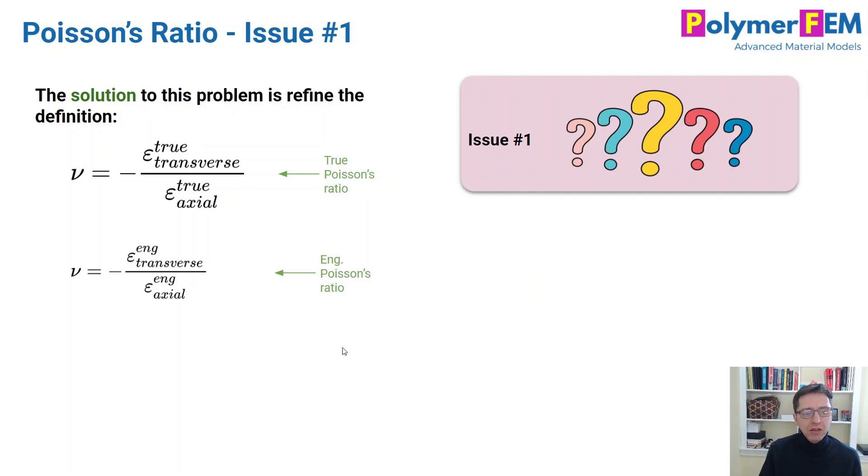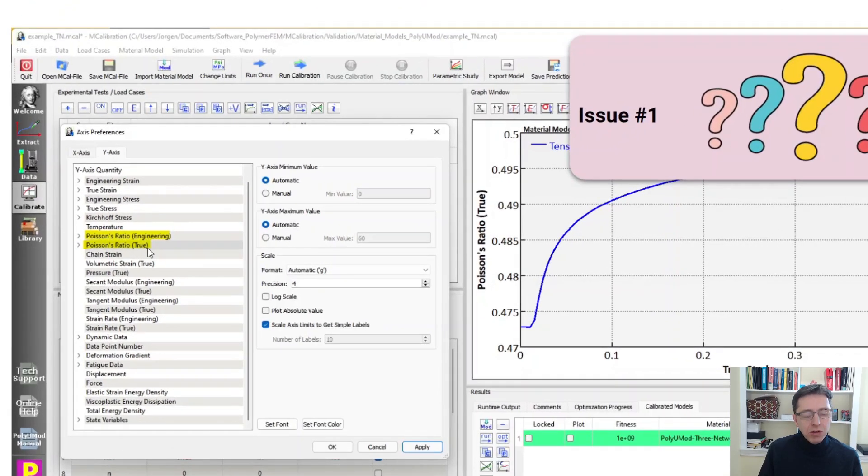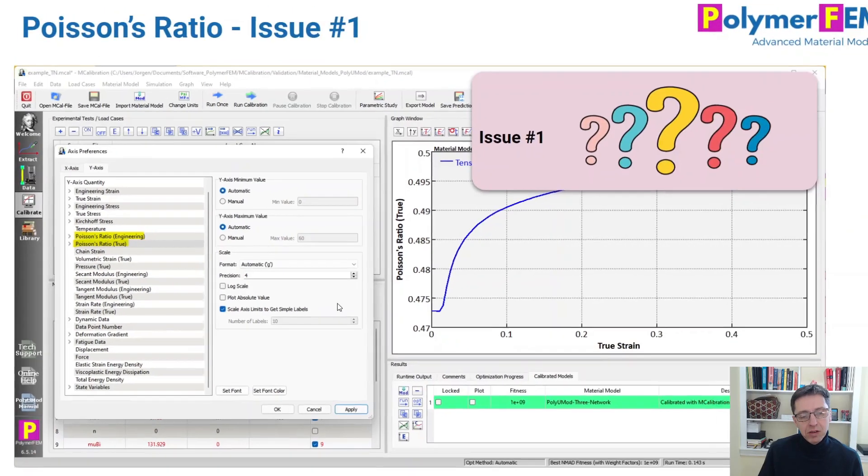So how do you overcome this? The easiest way is to come up with different Poisson's ratios. One is the true Poisson's ratio, which will be the ratio of the logarithmic or true strains as shown here. Or perhaps an engineering Poisson's ratio, which is the ratio shown here, or whatever ratio you're interested in. But you really have to say which one you're using because they are not the same, unless strains are really small. And if you use MCalibration, which is software for calibrating different material models that we have developed here at Polymer FEM, you will see that there are different Poisson's ratios that you can plot. You can pick the true Poisson's ratio or the engineering Poisson's ratio and they will be different. You can select that in the axis preference if you pick a plot of this kind.